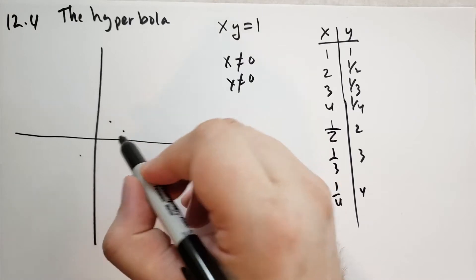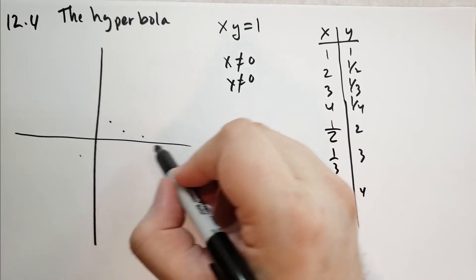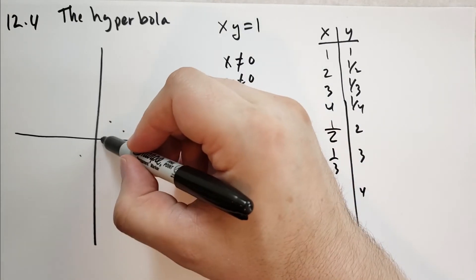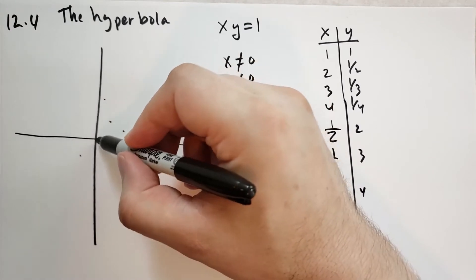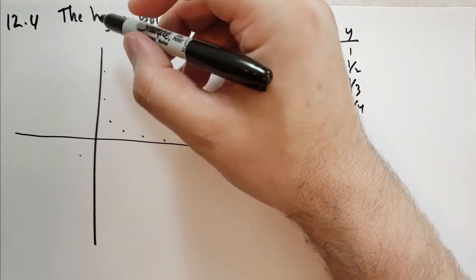So when x is 2, we go up to 1 half. When x is 3, we go to 1 third. When x is 4, we go to 1 fourth. And when x is 1 half, we go to 2. x is 1 quarter, we go to 4, and so on and so on like that.